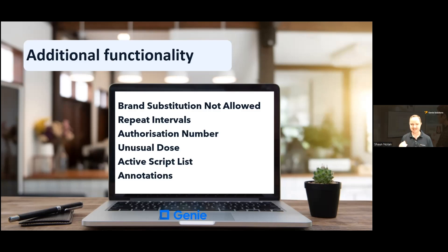Authorization Number is a state-based authorization code needed when prescribing S8 and some S4 drugs — the field name may vary depending on the location of your practice. Unusual Dose indicates if an unusual dose is in place for this medication; any medication where the dose is considered dangerous or unusual should be marked accordingly. Setting this to Yes acts as an endorsement of the dose — no initialing is required for an e-prescription. Active Script List indicates if the medication should be included or excluded from the patient's Active Script List. Annotations is a free text field, similar to writing a note on the bottom of a paper prescription.